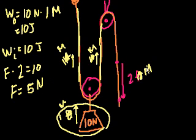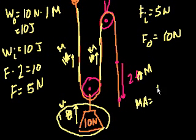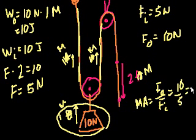So I pull down 5 Newtons for two meters, and it pulls up a 10-Newton weight for one meter — force times distance equals force times distance. The input force is 5 Newtons, the output force is 10 Newtons. Mechanical advantage is output over input: 10 over 5 equals 2. That makes sense because I have to pull twice as far for this thing to move up half that distance.